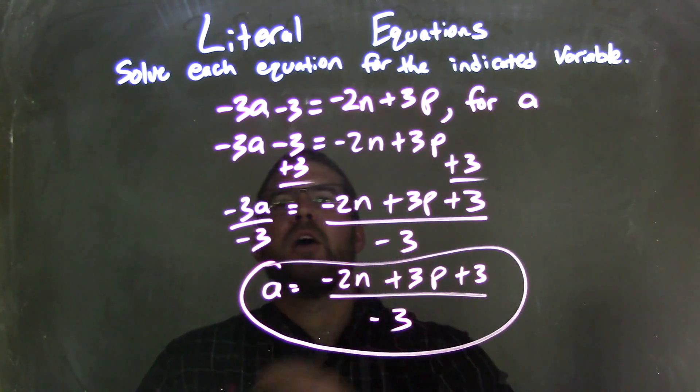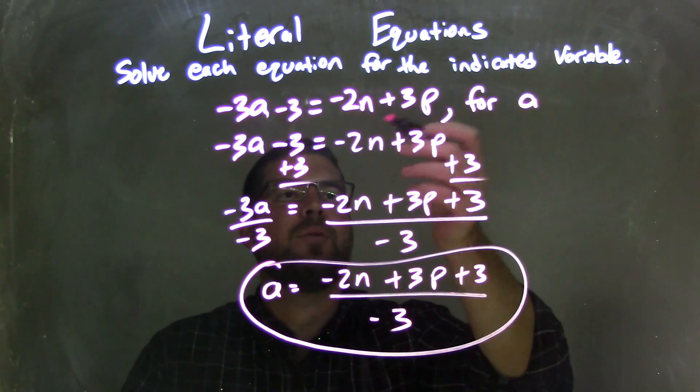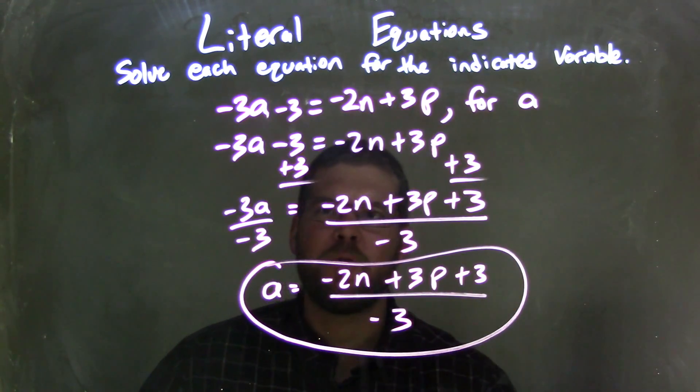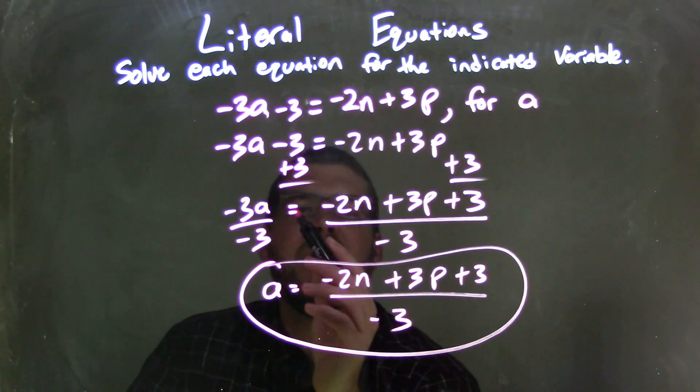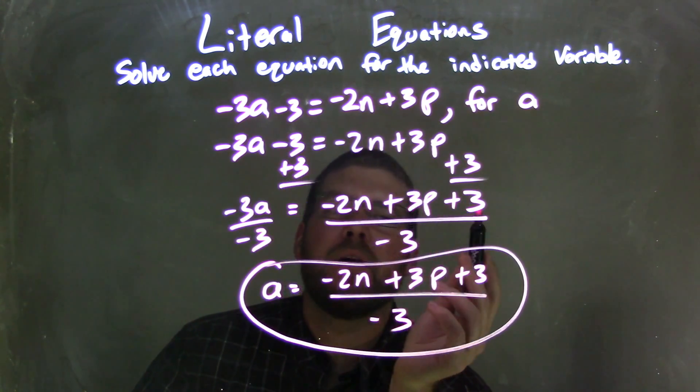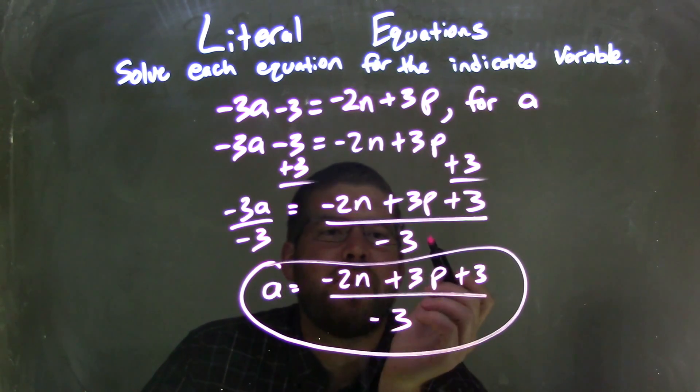So let's recap. We're given negative 3a minus 3, and that's equal to negative 2n plus 3p, and we're solving that for a. I added a 3 to both sides, giving me negative 3a equals negative 2n plus 3p plus 3. I then divided both sides by negative 3.